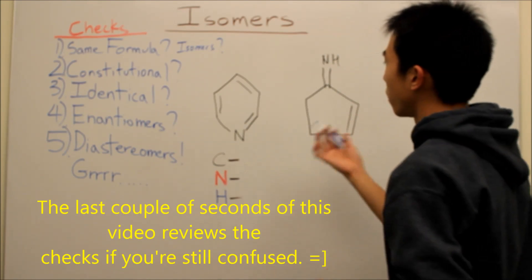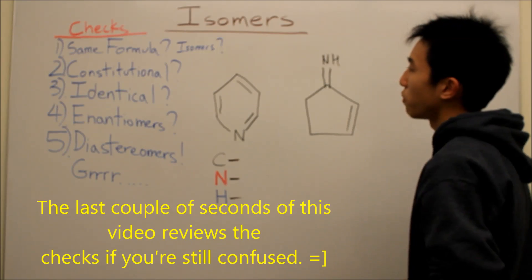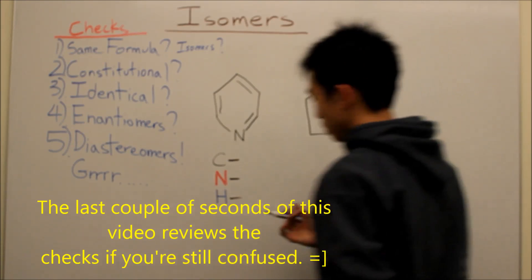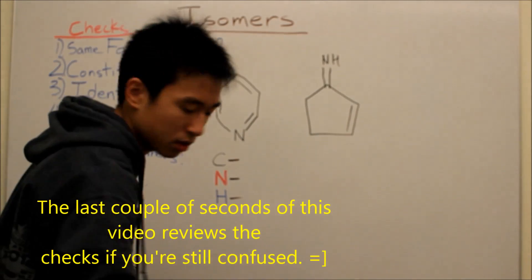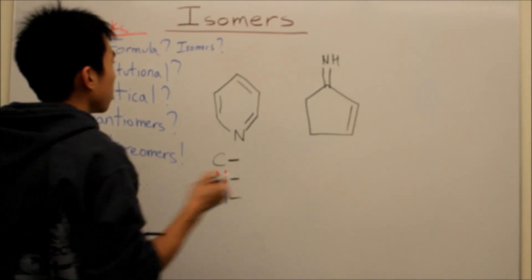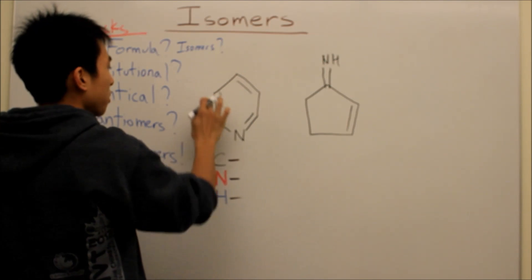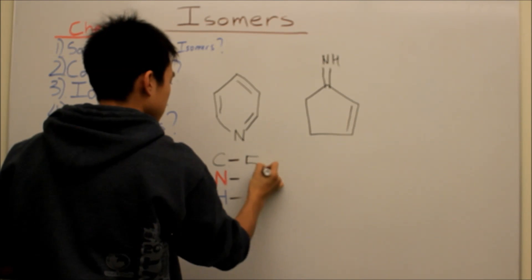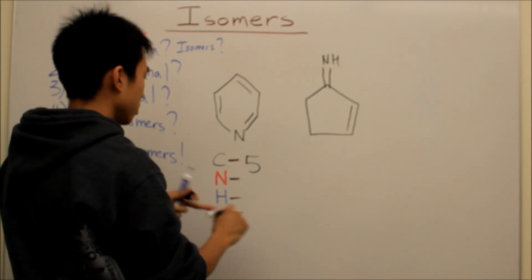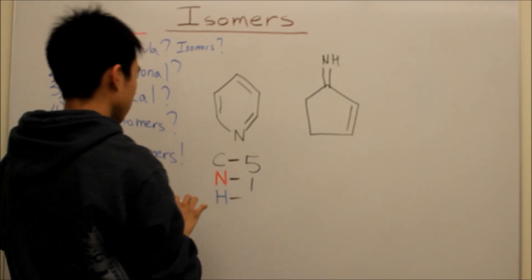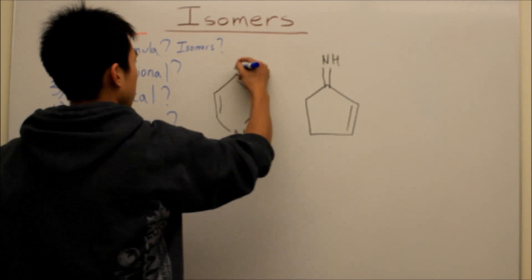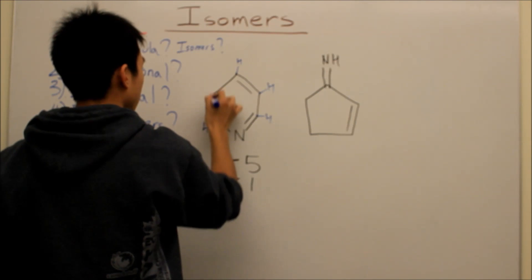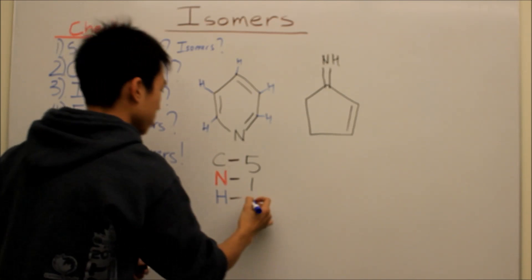Let's do this molecule right here. First things first, let's do the same formula check to make sure they're even isomers in the first place. Let's get the number of carbons: one, two, three, four, five carbons — and five carbons. Then nitrogens — there is one here. Hydrogens: one, two, three, four, five — so five hydrogens.